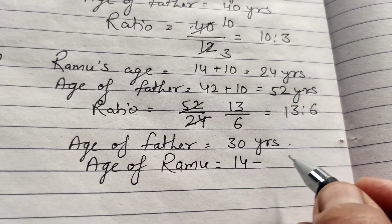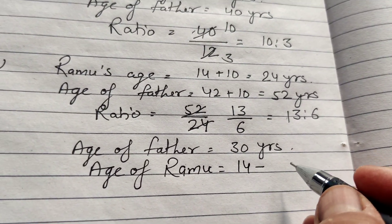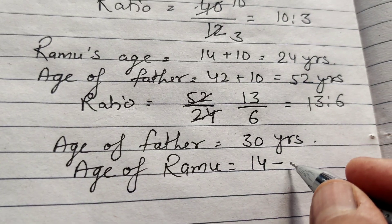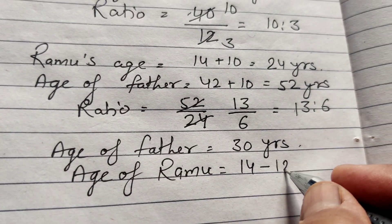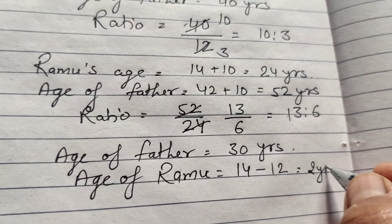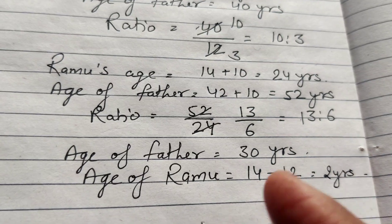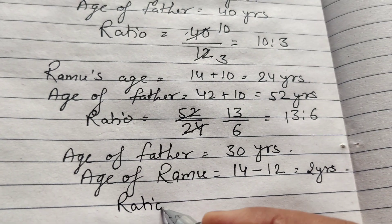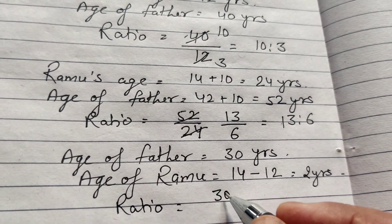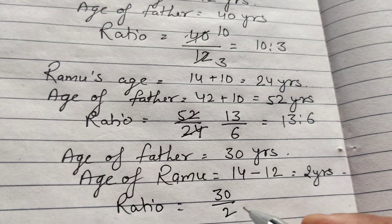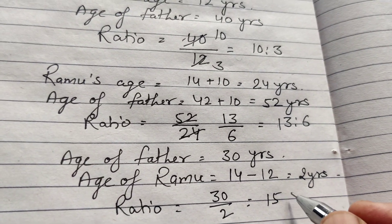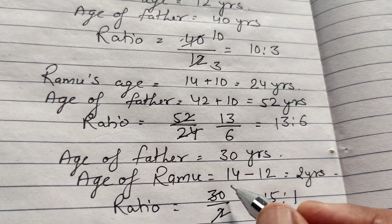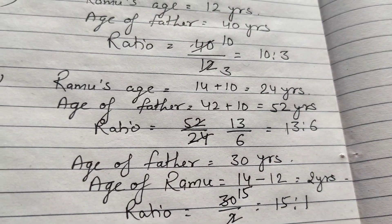14 minus 12 means Ramu was 2 years old. The ratio is 30 by 2, which equals 15 is to 1. Cancelling by 2, the ratio is 15 is to 1.